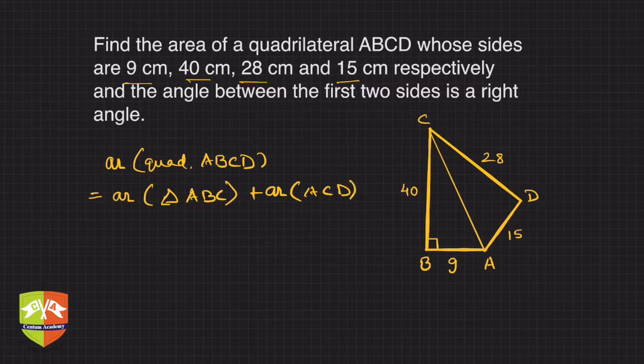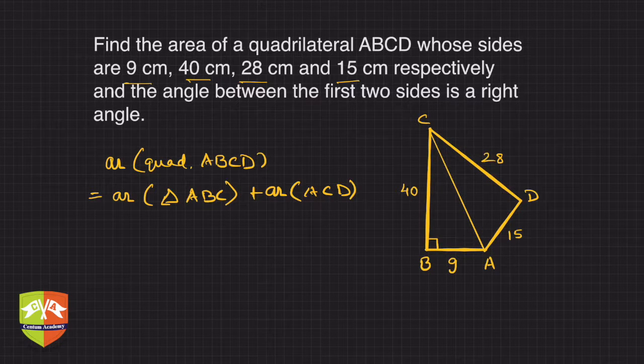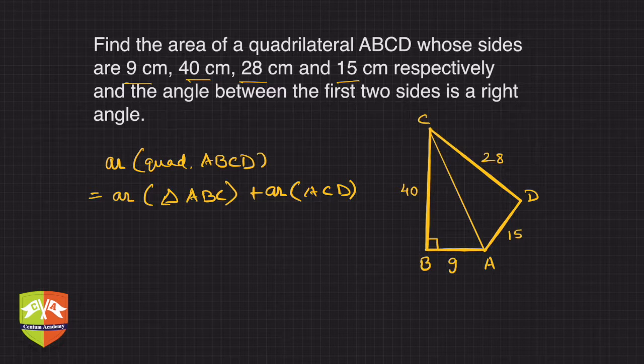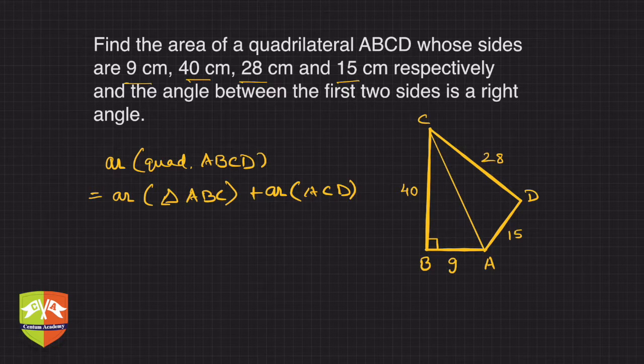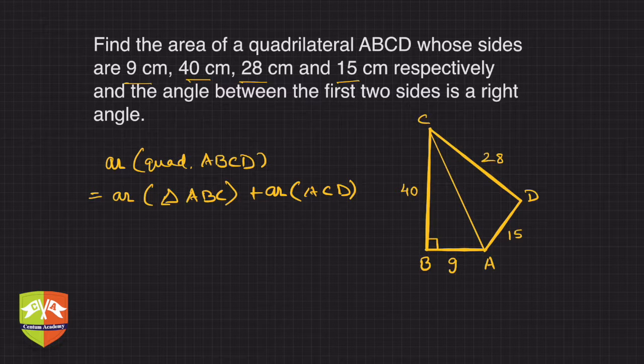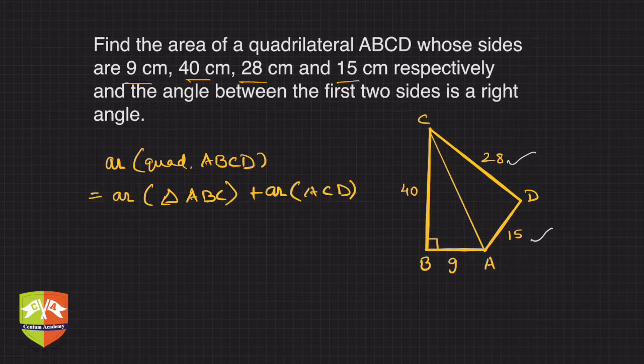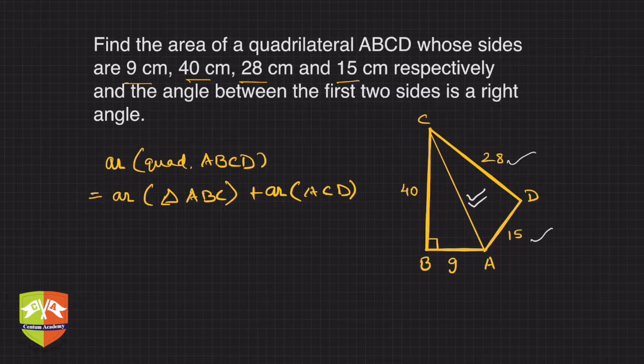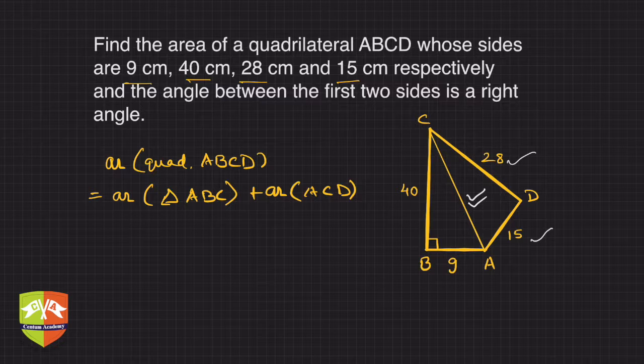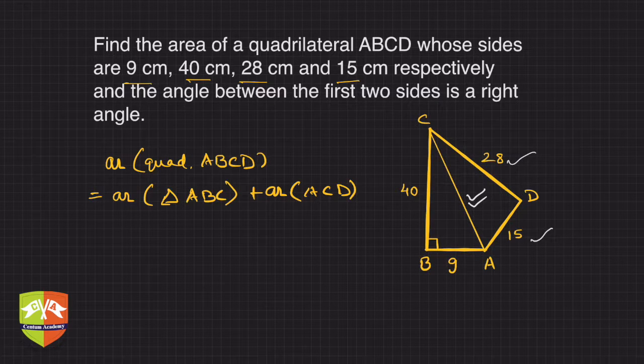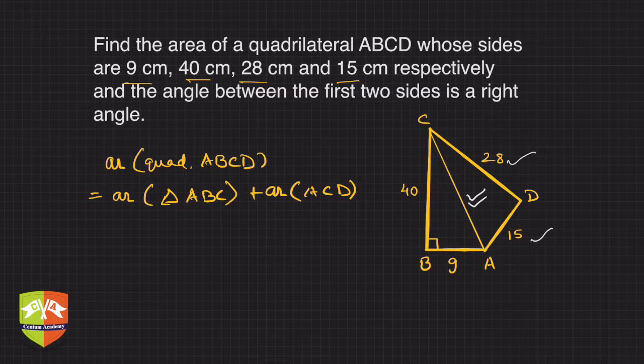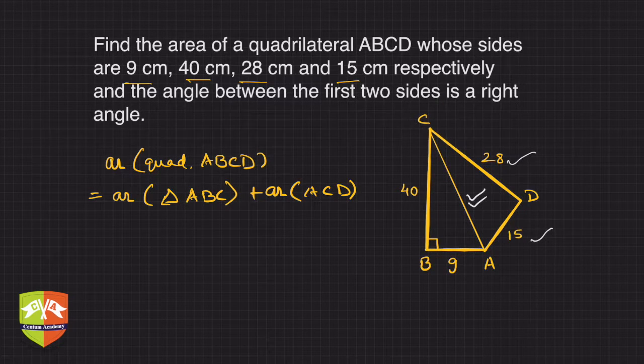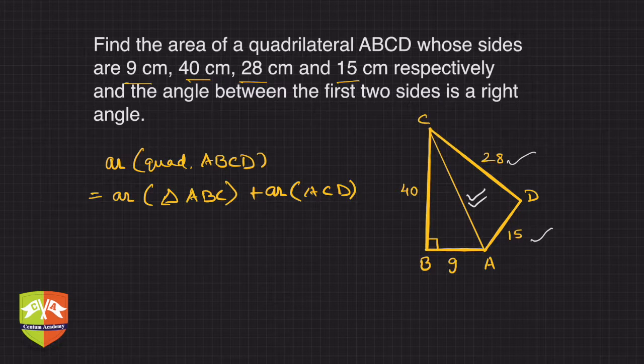This will be a lengthier task, but in triangle ACD we have two sides given, so we cannot use Heron's formula unless we know AC. But if you notice carefully, ABC is a right triangle with two sides given, so AC is the hypotenuse, and we can find AC and then proceed to find the area of ACD.